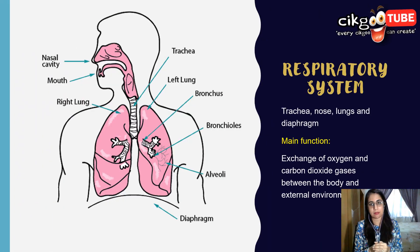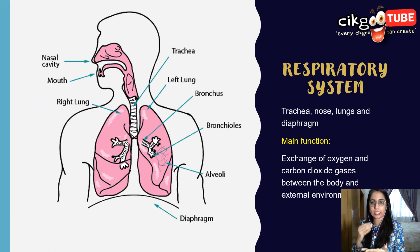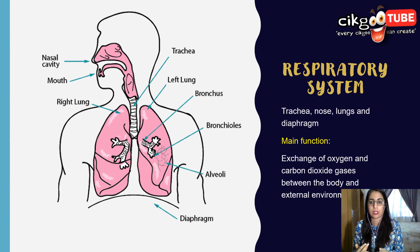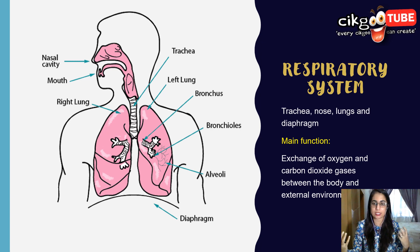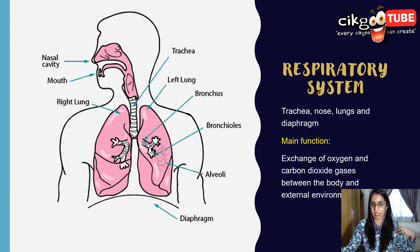The respiratory system consists of the trachea, nose, lungs, and diaphragm. Its function is to exchange oxygen and carbon dioxide between the body and the external environment.